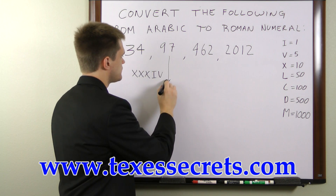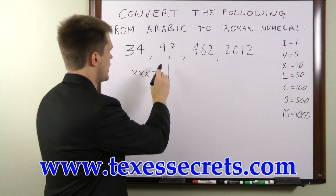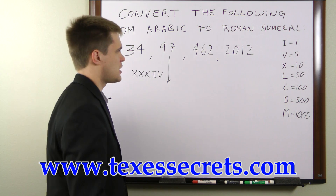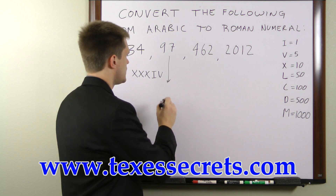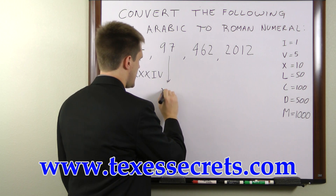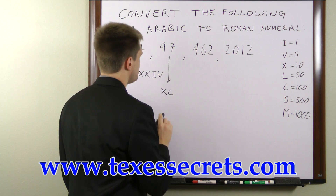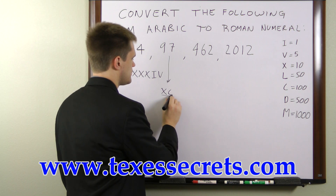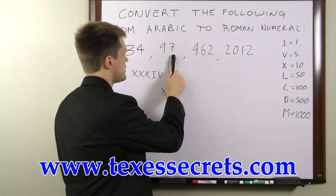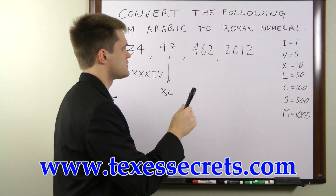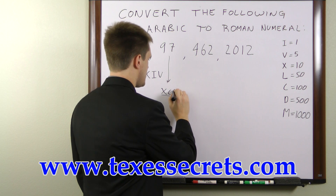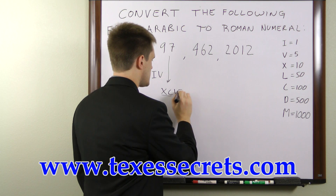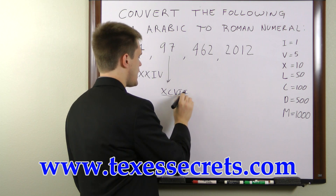For 97, we have a 9 in the tens column, so we're going to subtract 10 from 100, which gives us XC — that's our 90. So 97 can be written as XCVII.